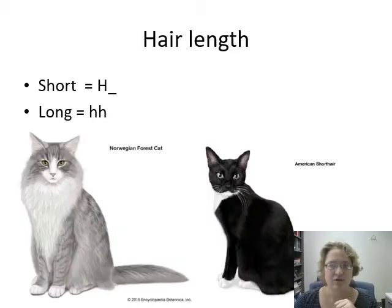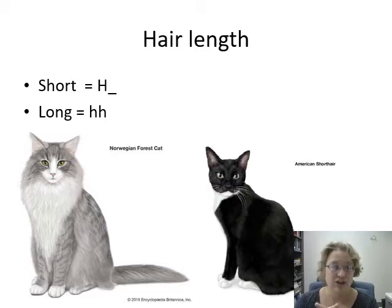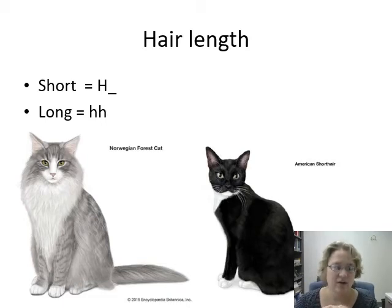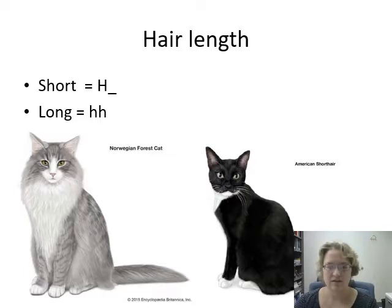The first locus is hair length. For short hair, it's the dominant gene, so you'll put that as a capital H underscore. For long hair, that's the recessive trait — that's two copies of the little h.